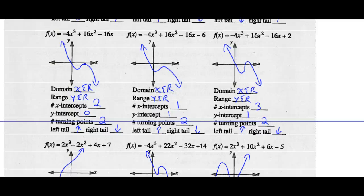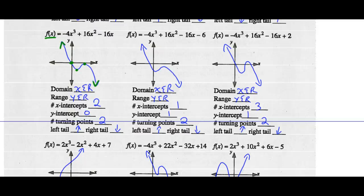For f(x) = −4x³ + 16x² − 16x: domain and range are both any real number. There are two x-intercepts — one at the origin. The y-intercept is zero, crossing at the origin. There are two turning points — one here and one right at the x-intercept. The left tail goes up while the right tail goes down.